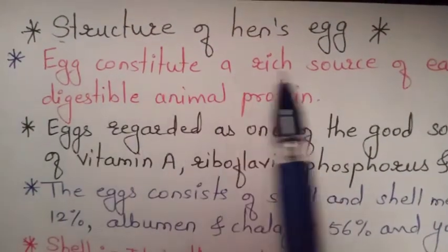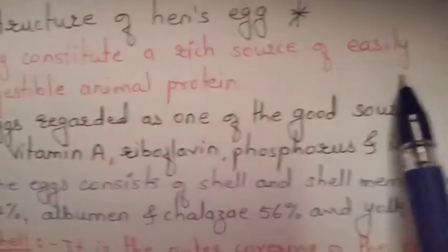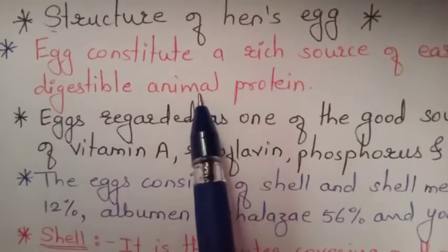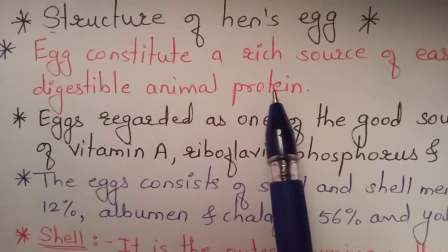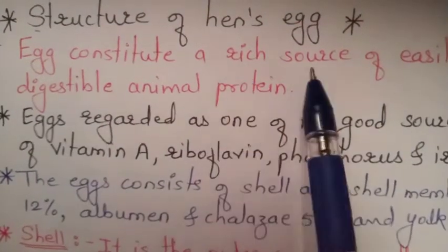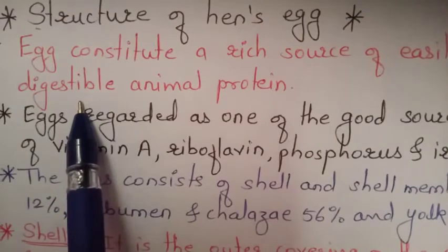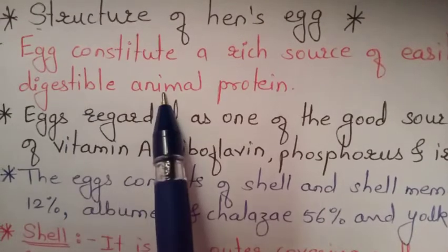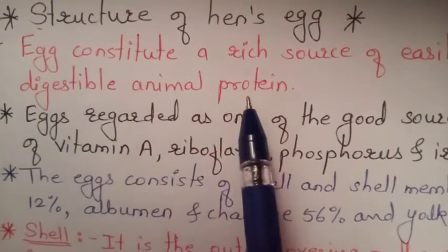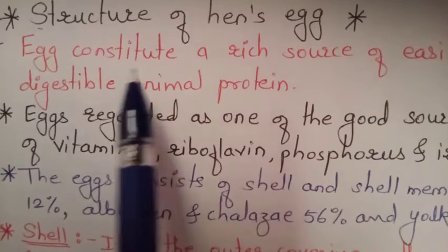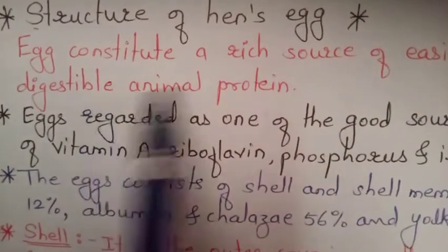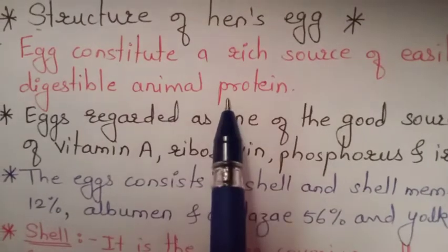Egg constitutes a rich source of easily digestible animal protein. Eggs contain animal protein that is easily digestible, and it is a rich source of protein.